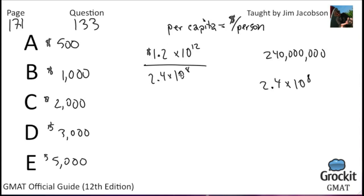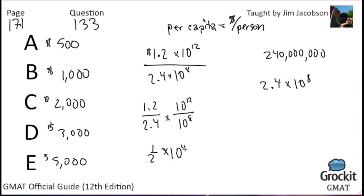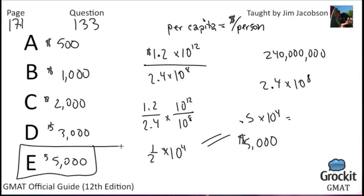We can split this into 1.2 over 2.4 times 10 to the 12th over 10 to the 8th. 1.2 over 2.4 is the same as 1/2, or 0.5. When dividing exponents you subtract: 12 minus 8 gives 10 to the 4th. So we have 0.5 times 10 to the 4th. Moving the decimal point 4 places to the right gives $5,000. Answer choice E.